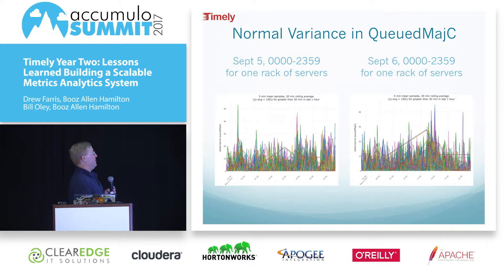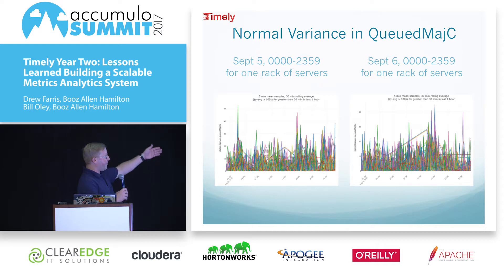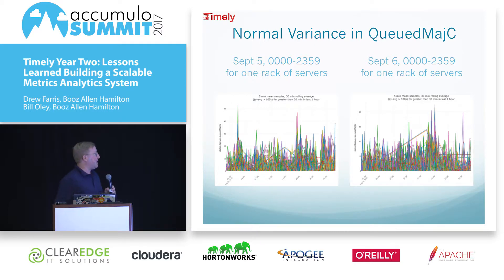Let's talk briefly about how to isolate aberrant data. If you're new on a system and you look at this first graph, these are the queued major compactions. A lot of data is being ingested into Accumulo and a lot of bulk imports are happening, so we have a lot of queued major compactions. You might look at this and think they're spiking up to 50 queued major compactions in some cases, but it comes right back down. You look at the next day — the same rack of servers over a 24-hour period on successive days — and the same thing is happening. So you might figure that's normal and you'll have to adjust your analytic to figure out when something bad is going on.